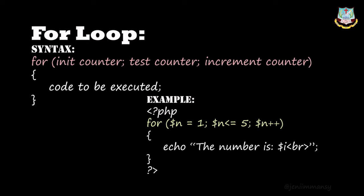Next one is increment counter — here we increase the loop counter value. We can give decrement or increment. We need 1, 2, 3... up to 5. So if we give n++ in the increment counter, the first value is 1, it checks the test condition, then increments to 2. Again, the code executes and checks whether 2 is less than or equal to 5. Yes, so it increments to 3, and the process continues.